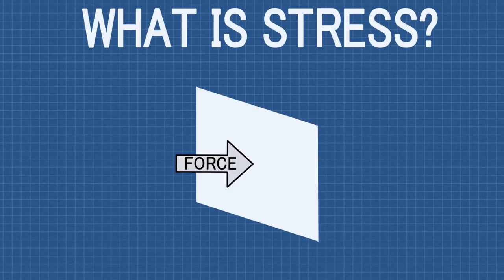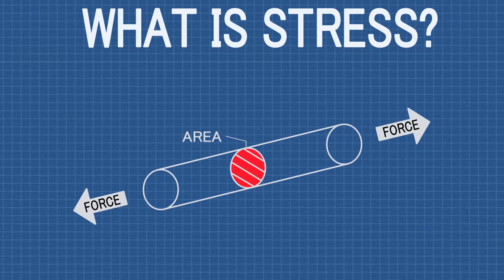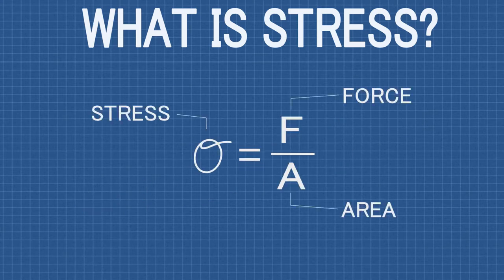Before we get into building the spreadsheet, let's first understand a little bit about stress and more specifically what types of stresses these joints are under. Stress is defined as a force on an area — so if we have a certain force applied to a body, that force would be dispersed throughout each cross-sectional area that is resisting the force. In other words, stress equals force divided by area. The equation being sigma, the symbol for stress, equals F over A.